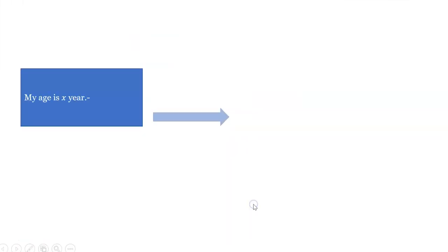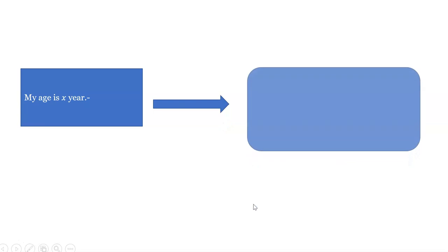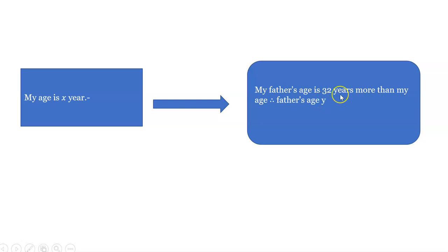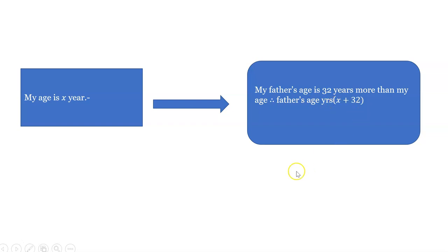My age is x years. My father's age is 32 years more than my age, and therefore the father's age is x plus 32 years.